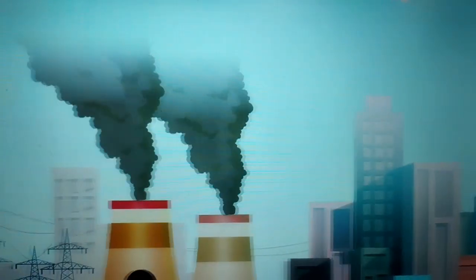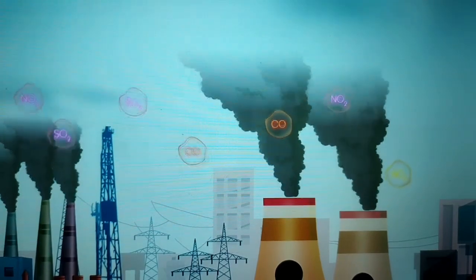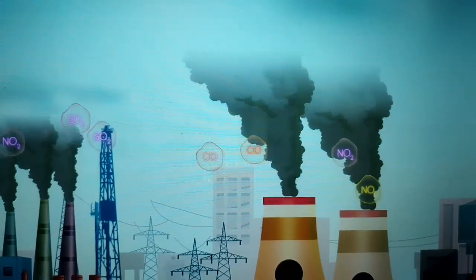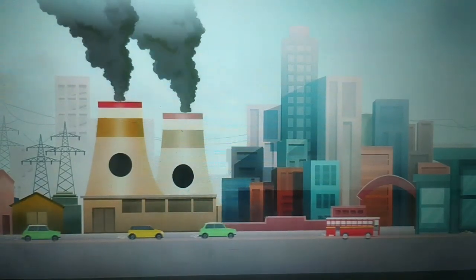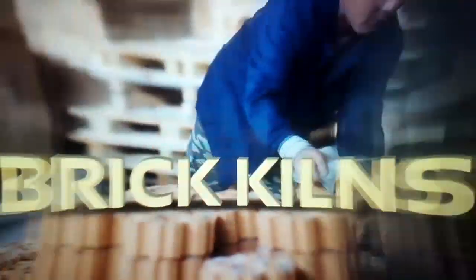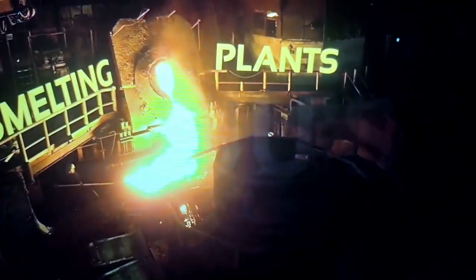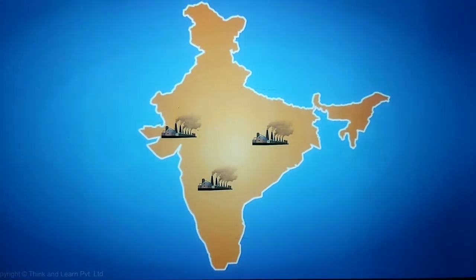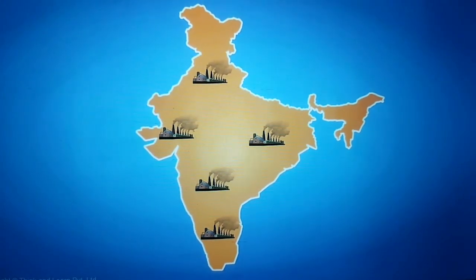Industries produce toxic gases that cause air pollution. Gases like sulfur dioxide and carbon monoxide are some of the main pollutants. Air particulate matter and dust particles are also hazardous to humans. Chemical and paper factories, brick kilns, refineries, and smelting plants are the major contributors of air pollution. Violation of pollution norms by these industries worsens the situation in many parts of India.